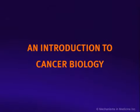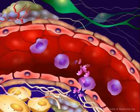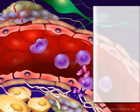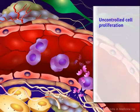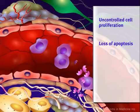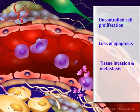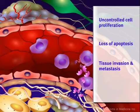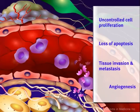An Introduction to Cancer Biology. In this presentation, we will discuss selected characteristics common to many cancers: abnormal signal transduction resulting in uncontrolled cell proliferation, loss of apoptosis or programmed cell death, tissue invasion and metastasis permitting spread of the cancer, and angiogenesis leading to enhanced blood supply of tumors.